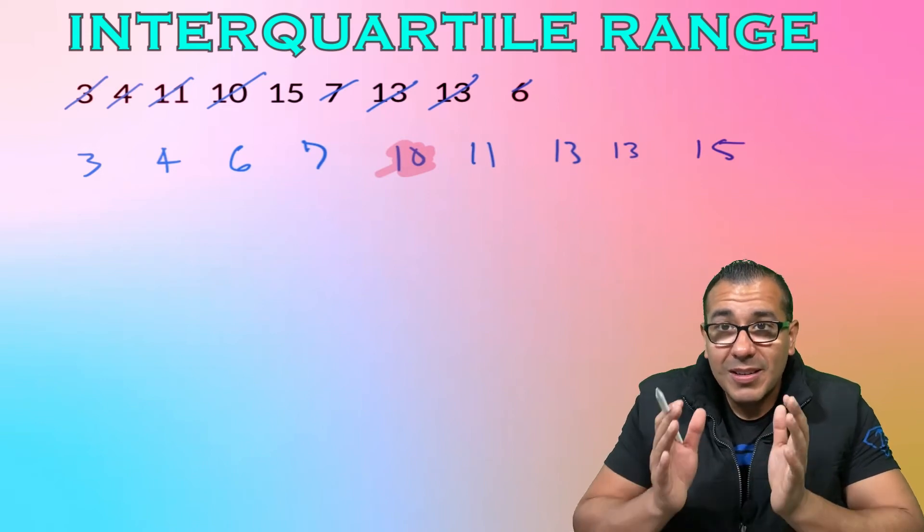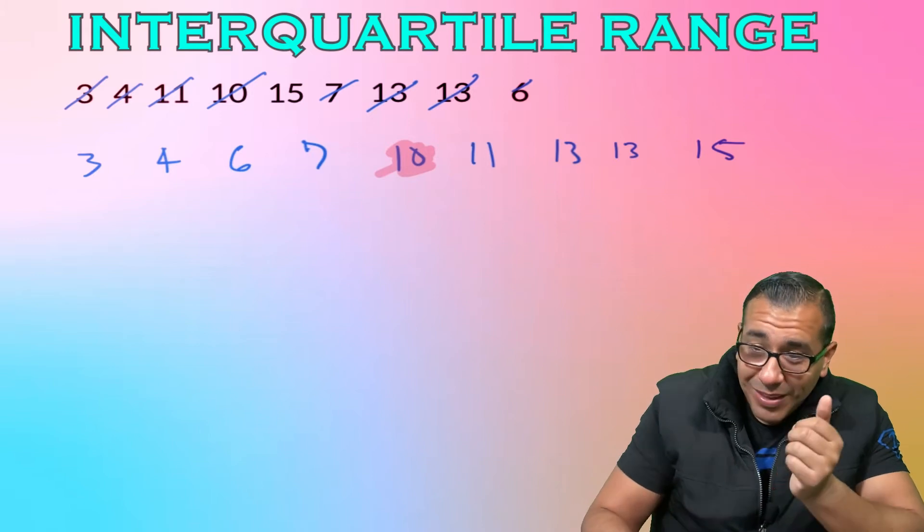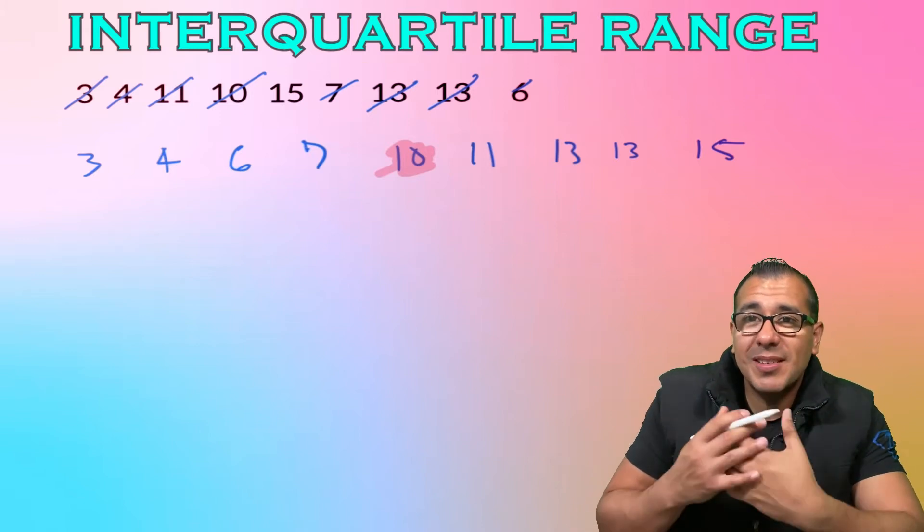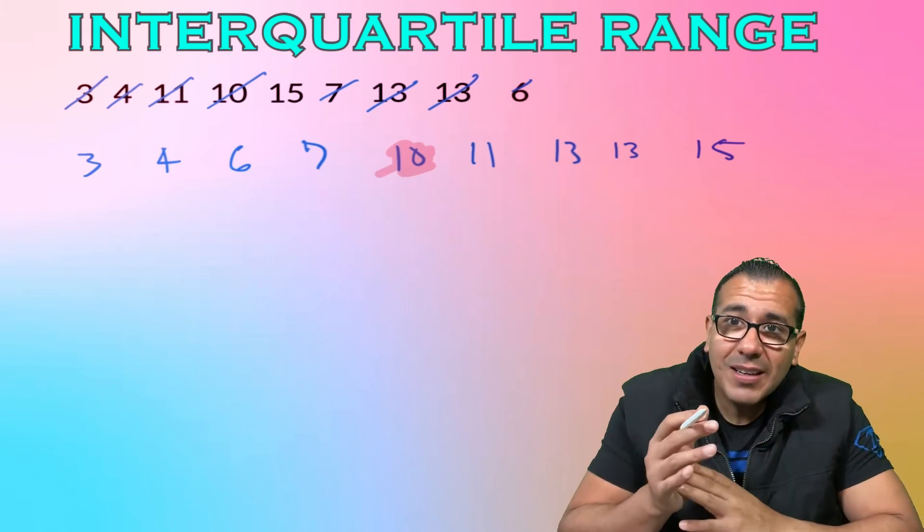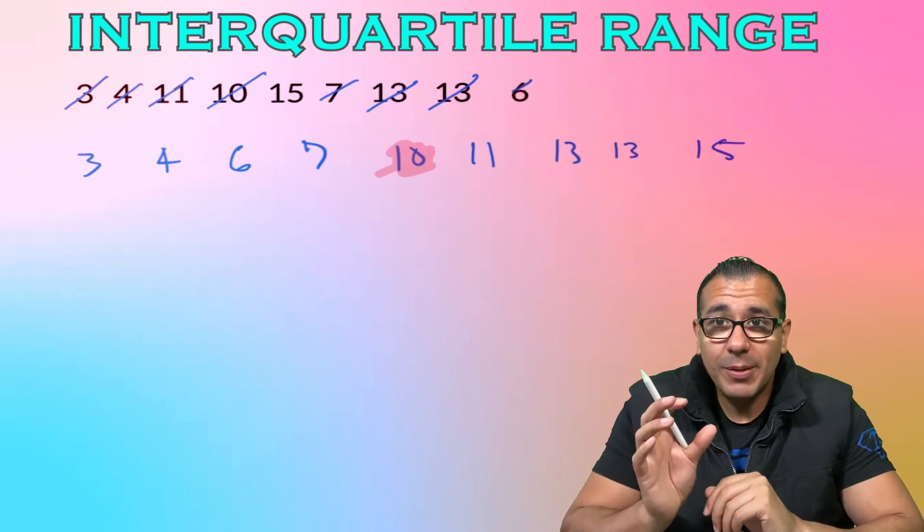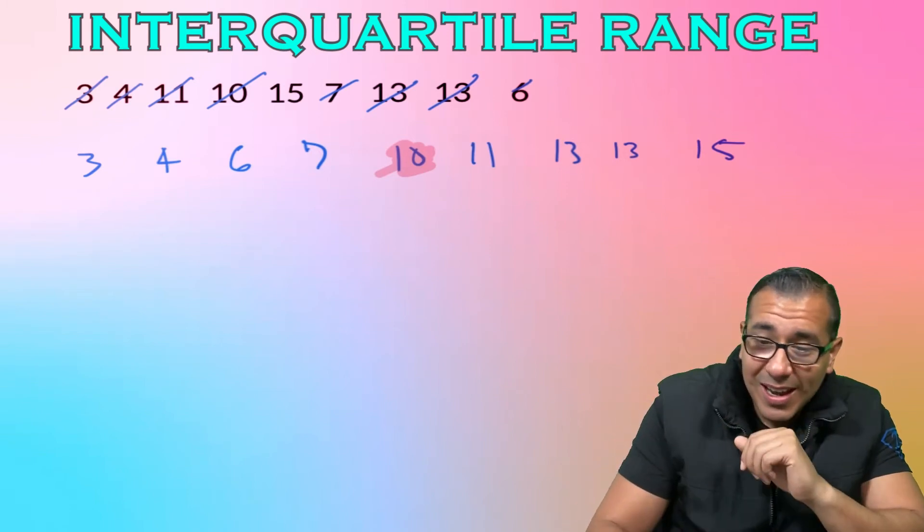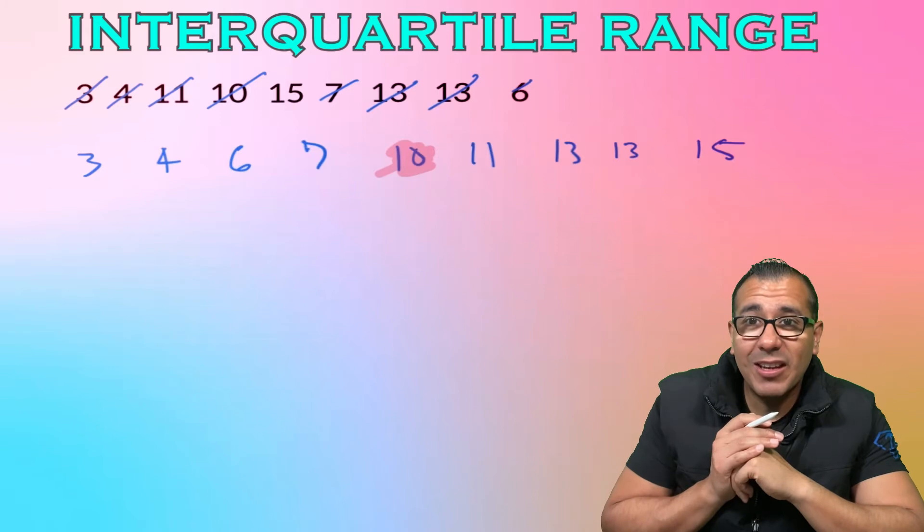Our goal is to describe this middle 50 percent. We're going to break this up like a basketball game or football game. These games are broken down into quarters, and we know quarter two and quarter three together make up 50 percent of that game. That's what the IQR helps us identify.